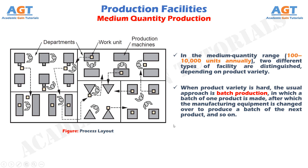Batch production is commonly used for make-to-stock situations, in which items are manufactured to replenish inventory that has been gradually depleted by demand. The equipment is usually arranged in a process layout, as shown in this figure.